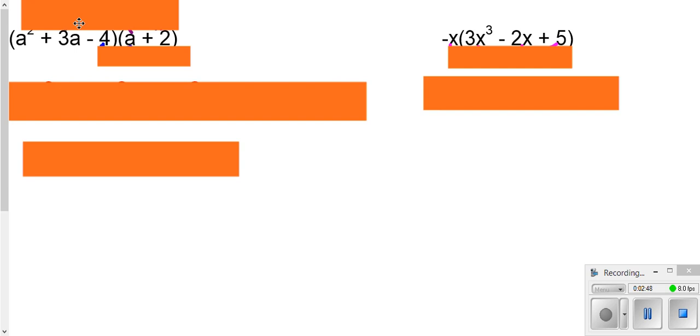So once again, I had said before, when you're multiplying in between the parentheses, you need to go ahead and take your a squared times each one of these. Take your 3a times each one of these. And then you take your negative 4 times each one of these.